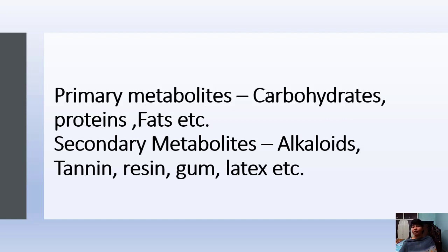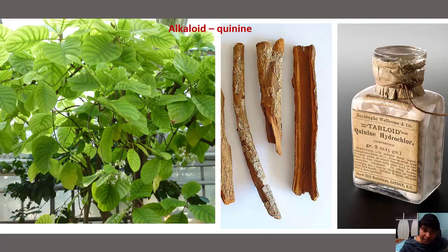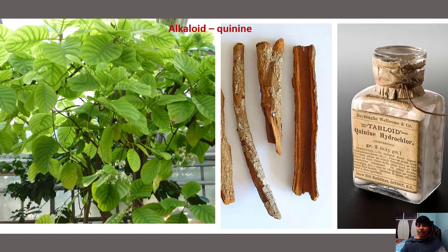Primary metabolites contain carbon, hydrogen, and oxygen — carbohydrates, proteins, and fats. Secondary metabolites contain some other elements. Now let us see the uses of these chemicals to plants and what humans do with them. This is an interesting plant — Cinchona officinalis. From the bark of this plant, nitrogenous waste materials are stored. Humans found the use of this nitrogenous waste — this alkaloid from Cinchona officinalis is called quinine.